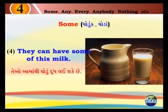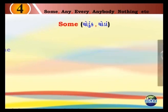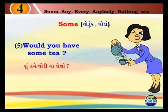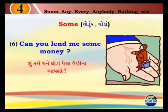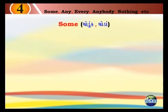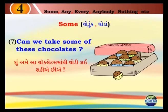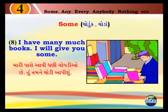4. They can have some of this milk. Teeo, aamathii tho'du dh lai shakye chhe. 5. Would you have some tea? Shoo, thamay thodi chalea shou. 6. Can you lend me some money? Shoo, thamay maan e thoda paisa ucchi na aap shou. 7. Can we take some of this chocolates? Shoo, aamay a chocolates maathii thodi lai shakye chhe. 8. I have many books. I will give you some. Marei paas ea avi ghani chopadiyo chen. Shoo, thamay thodi aapish.